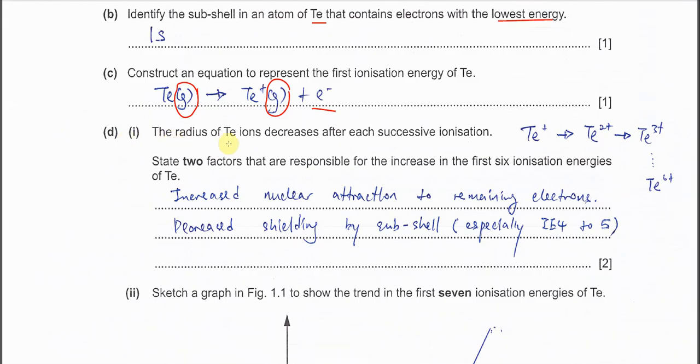Okay, part D1, the radius of Te ion decreased after each successive ionization energy. So it becomes smaller. So means Te positive is larger than Te 2 positive. 2 positive is larger than Te 3 and so on. State two factors that are responsible for the increase in the first 6 IE of Te. For the first 6 IE, you have to understand it's always increasing. It will not be up and down. Because when the electrons remove from the elements, so it will form positive. After that, 2 positive, 3 positive, until 6 positive in this case.